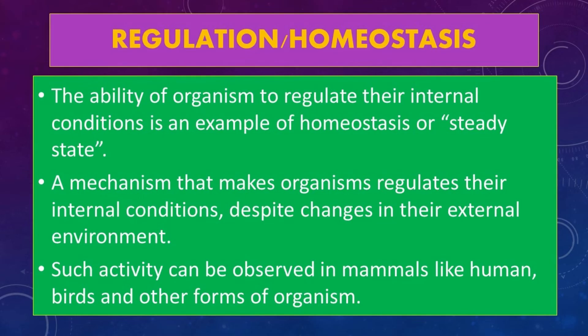Number seven, the regulation or homeostasis. Living things have parts and processes that help individuals or species survive. The ability of organisms to regulate their internal conditions is an example of homeostasis, or steady state, a mechanism that makes organisms regulate their internal conditions. Despite changes in their external environment, such activity can be observed in mammals like humans, birds, and other forms of organisms.